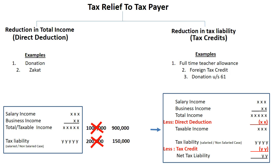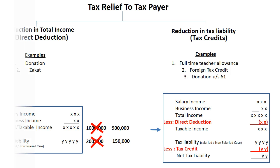On the basis of this format, all direct deduction and tax credit calculations are done. For example, we discussed two examples of direct deductions, but there are actually 8 direct deductions. Similarly, we discussed 3 tax credit examples but there are 15 total. If an exam question gives all 8 direct deductions, you use the same format — just add 8 more lines under direct deduction. If there are 8 or 9 tax credits, the format remains the same with those lines added under tax credit, minusing each one.